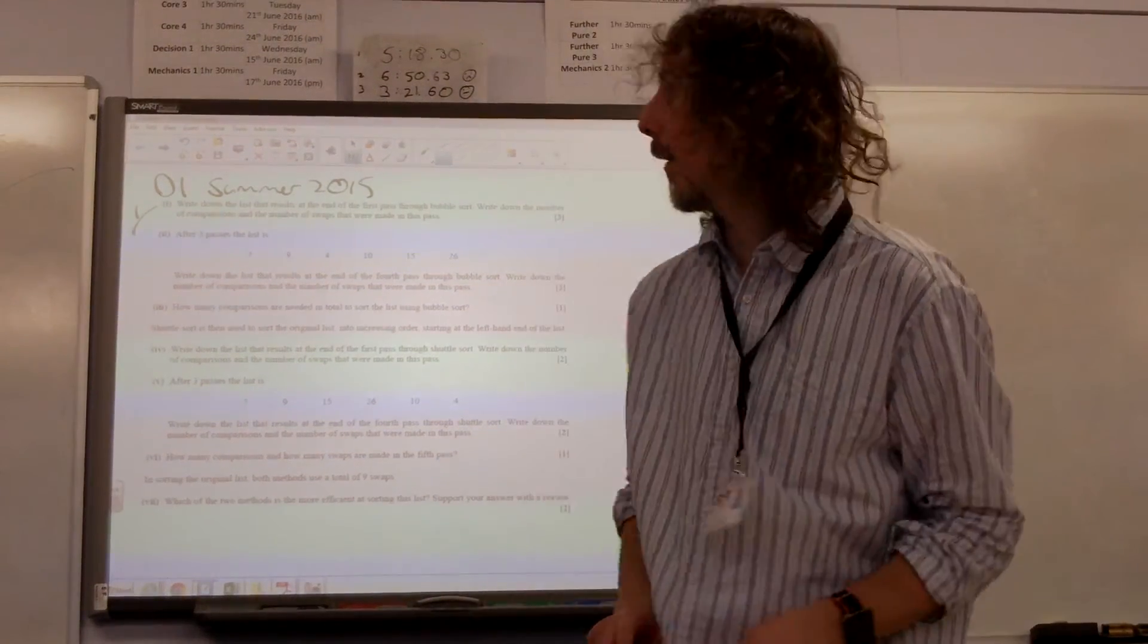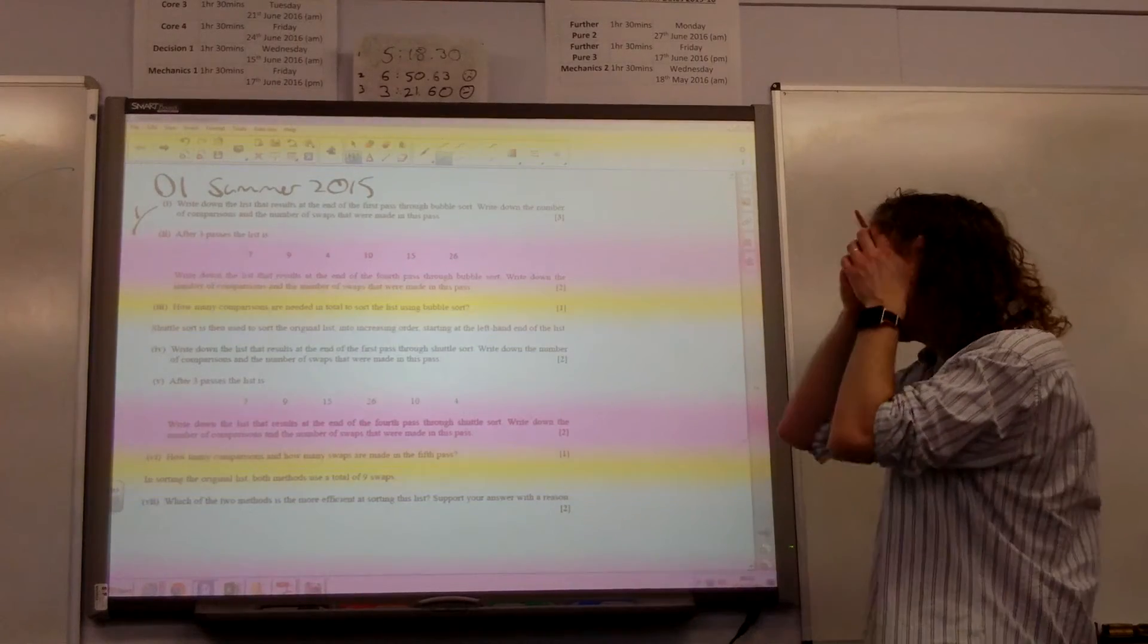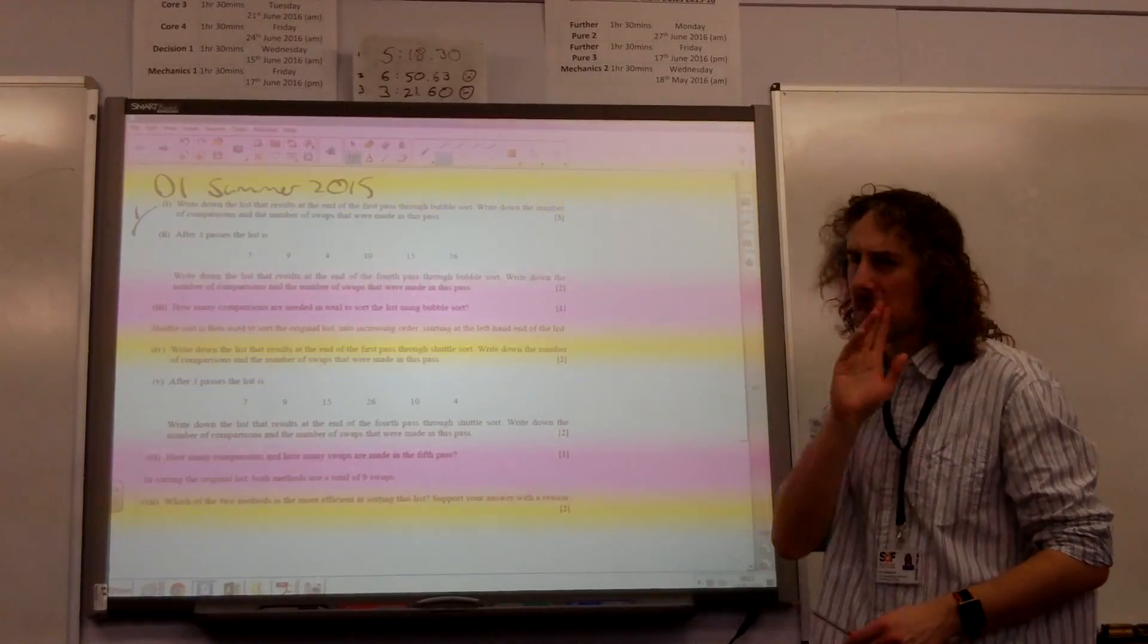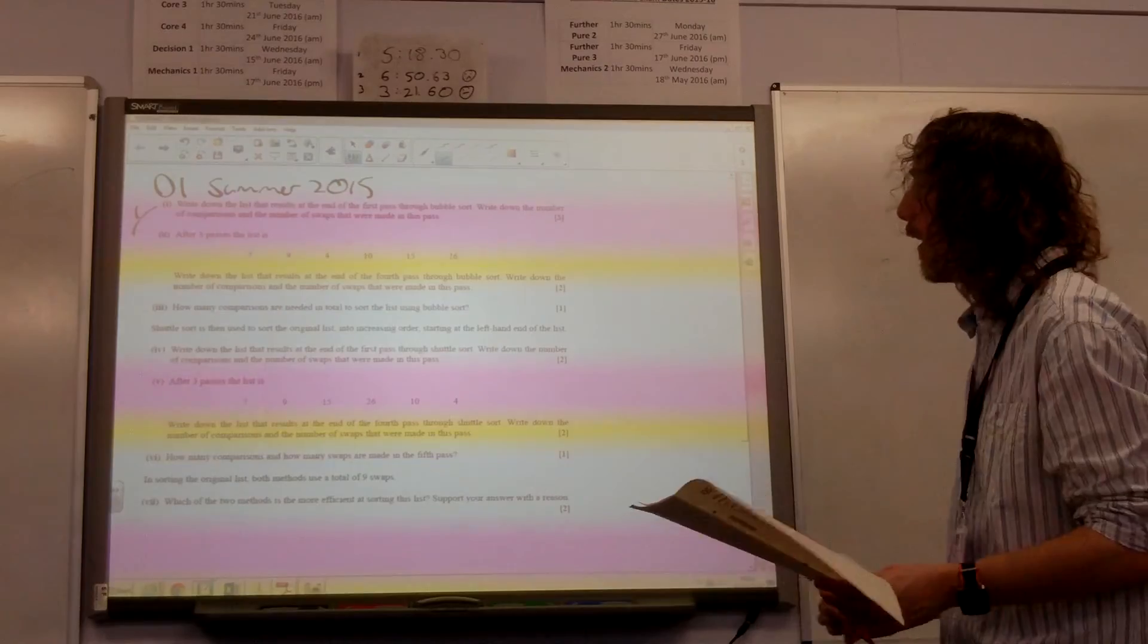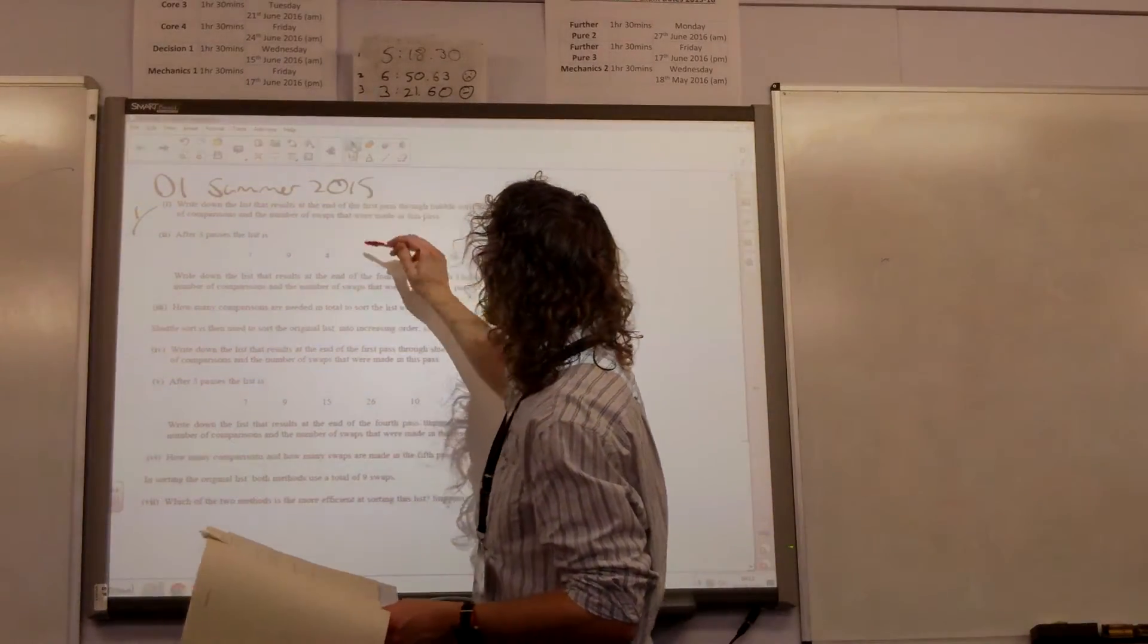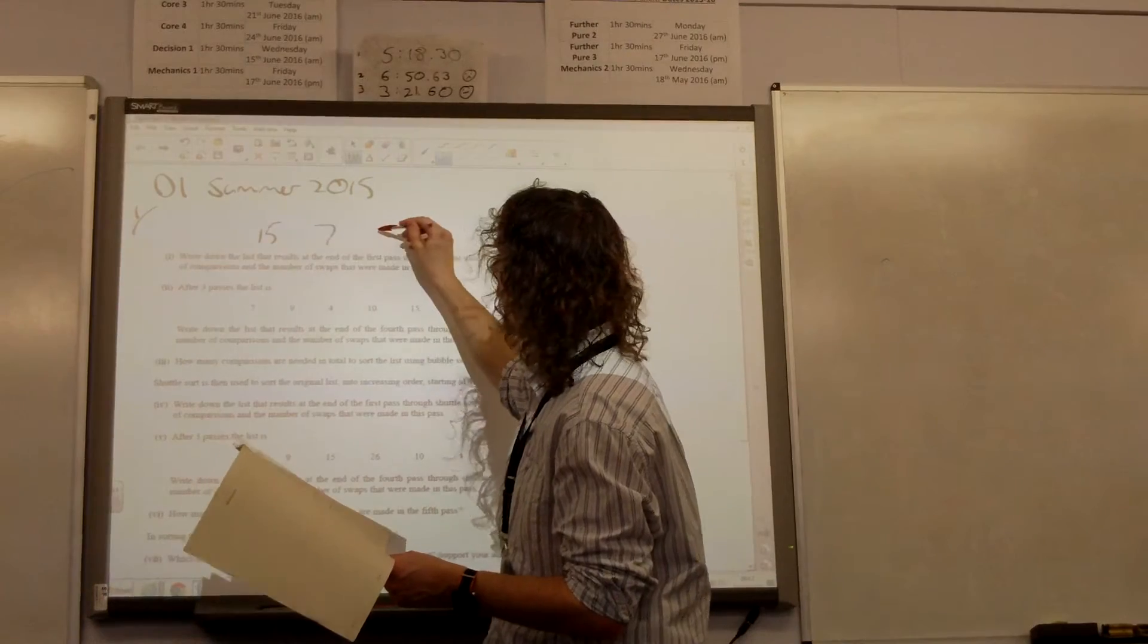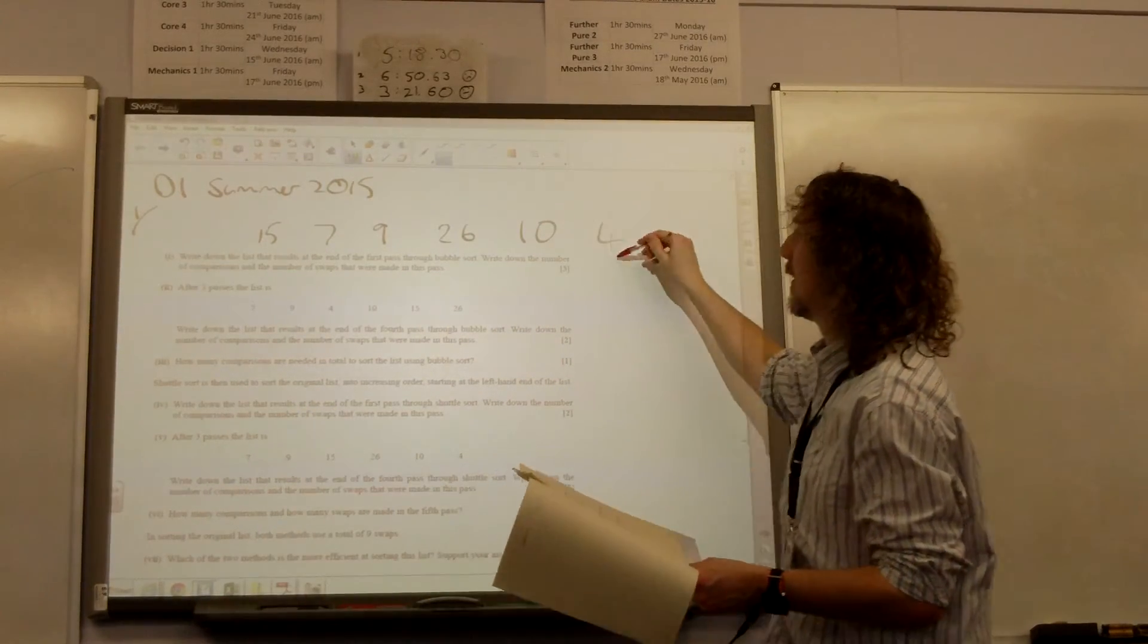Now it's recording. Right, okay, so question one. Write down this list. The list that results at the end of the third pass through bubble sort. Have I missed part of the question up here? Oh no, we haven't got the numbers. I've missed part of the question. Oh no, that was not a good start. The numbers were 15, 7, 9, 26, 10, 4.